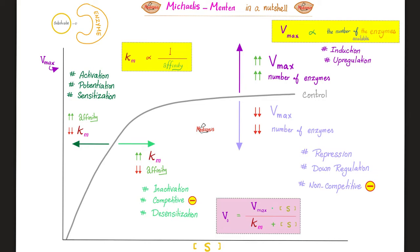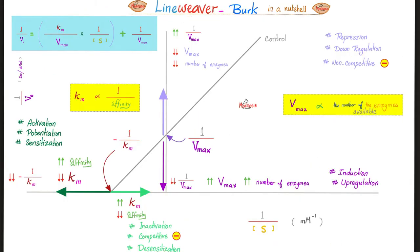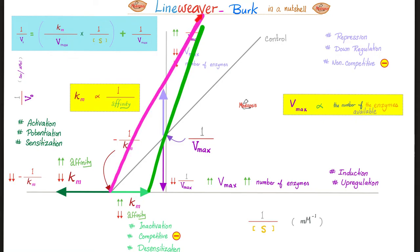On the Michaelis-Menten graph, competitive inhibitors shift the curve to the right. The Vmax did not change, but the Km is shifted to the right, which means it went up. A non-competitive inhibitor graph goes down. On the Linweaver-Burk plot, with competitive inhibitors, Km will go up but Vmax will not change. With non-competitive inhibitors, Vmax will decrease, so 1 over Vmax will go up, but Km will not change.